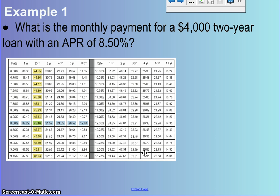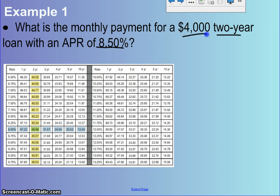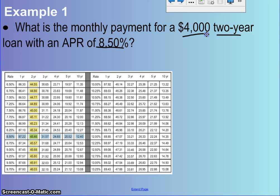Example one says, what is the monthly payment for a $4,000 two-year loan with an APR of 8.5%? An important thing I need you to write as a reminder: this chart is the monthly payment per $1,000 that is lent.